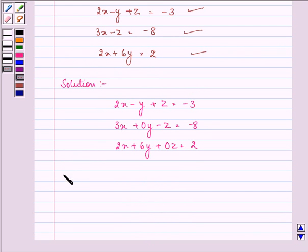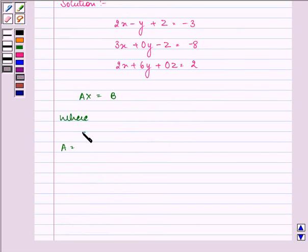Now, we have A times X equals B, where matrix A consists of: 2, 3, 2, the coefficients of x; then minus 1, 0, 6, the coefficients of y; and then 1, minus 1, 0, the coefficients of z.